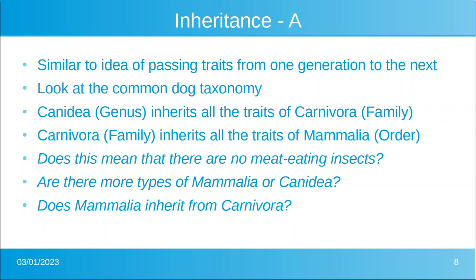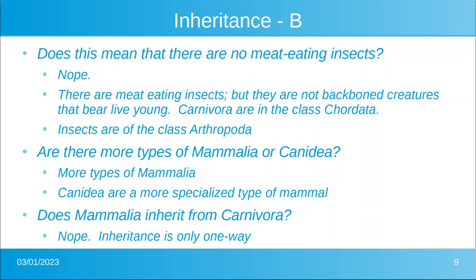There are indeed meat-eating insects — the carrion beetle or graveyard beetle comes to mind — but they are not backboned creatures that bear live young and nurse with milk. Carnivora is a family within the class Chordata. Insects are of the class Arthropoda, meaning jointed leg. There may be meat-eating genera within Arthropoda, but Carnivora specifically is in Chordata.